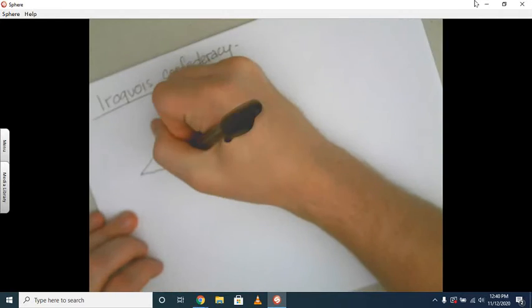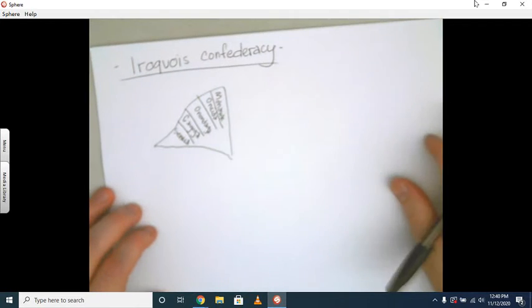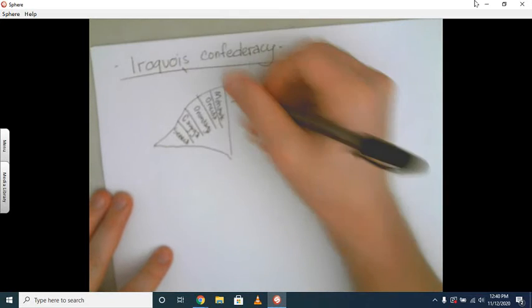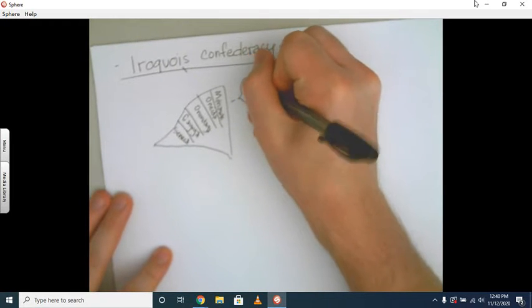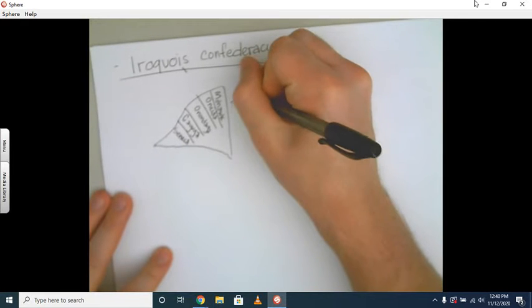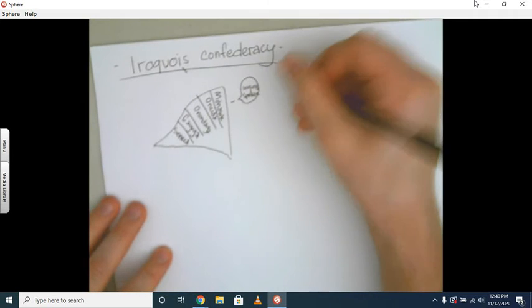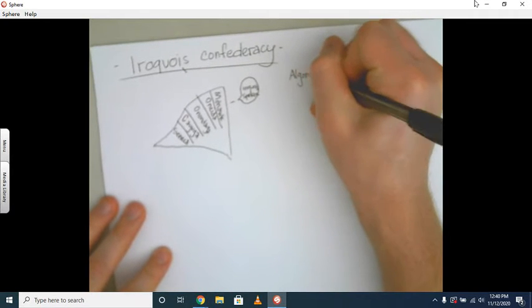One of the reasons that we talk about the Iroquois Confederacy is because it's a group of tribes that speak the language Iroquois. They're surrounded by a group of tribes that all speak a different language, which is Algonquin.